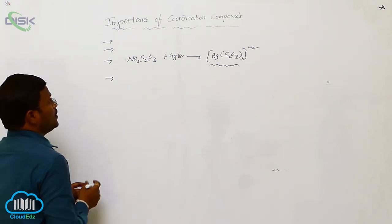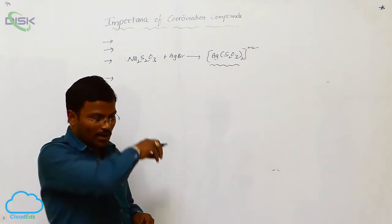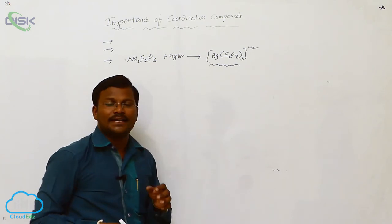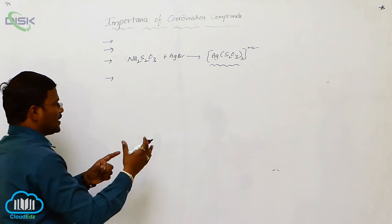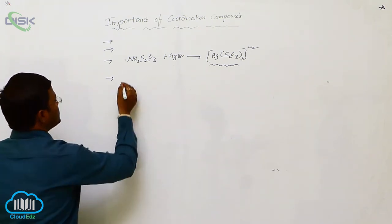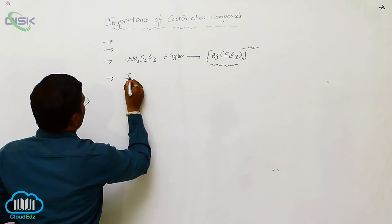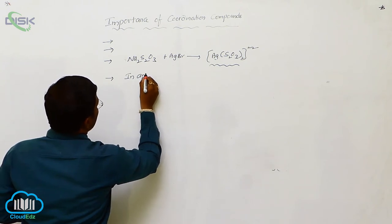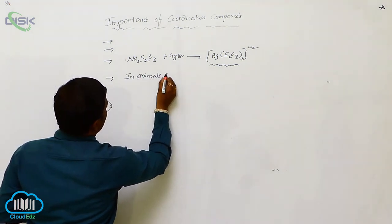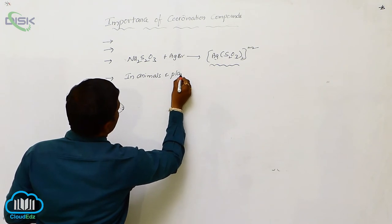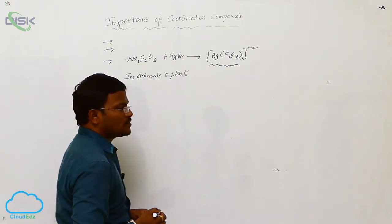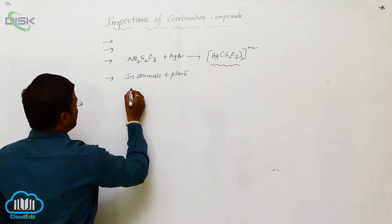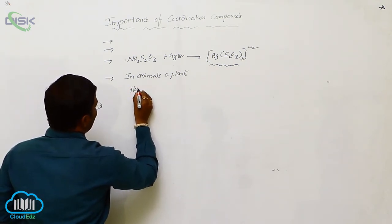here the most important coordination compounds that are identified to be present in our daily life, in plant kingdom and animal kingdom, especially in case of animals and plants, the coordination compounds are present in hemoglobin.